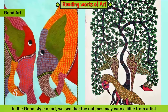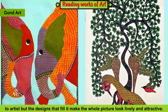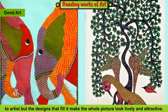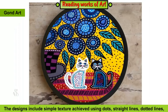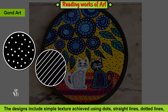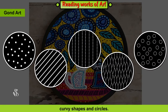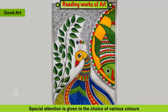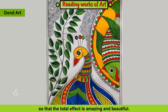In the Gond style of art, we see that the outlines may vary a little from artist to artist, but the designs that fill it make the whole picture look lively and attractive. The designs include simple texture achieved using dots, straight lines, dotted lines, curvy shapes and circles. Special attention is given to the choice of various colours so that the total effect is amazing and beautiful.